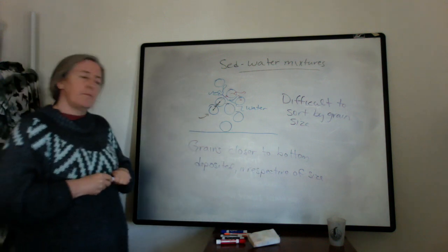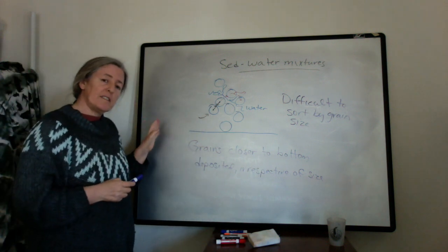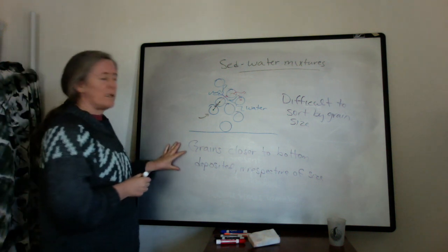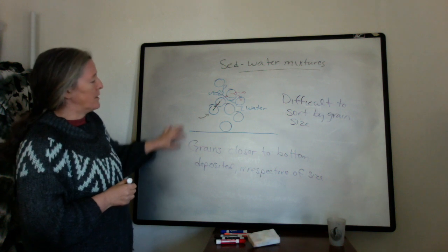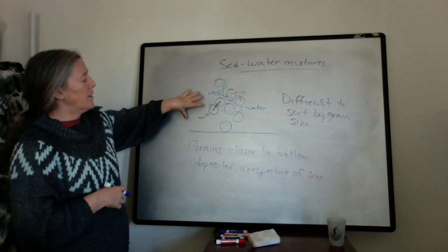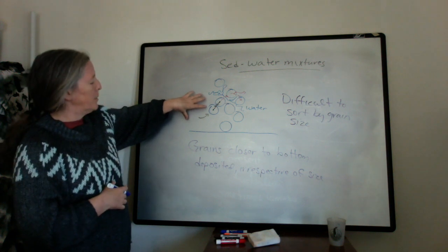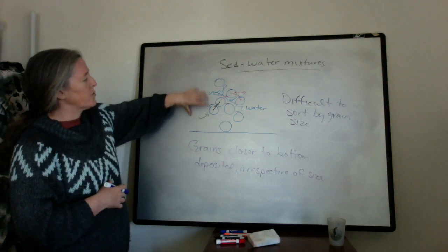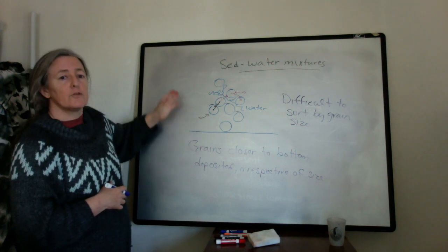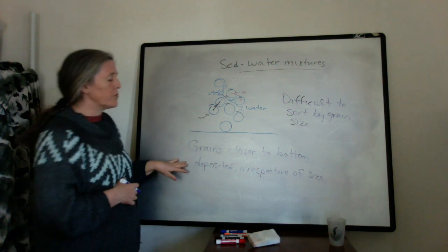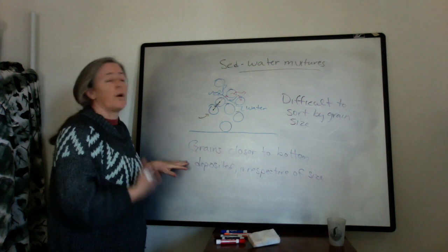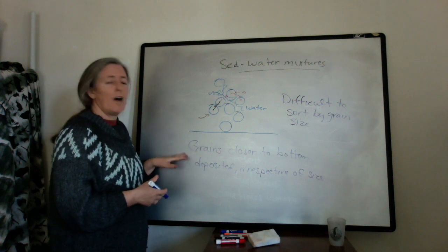So if we think back to the Bouma A facies, which is that bottom one that is massive, that is what's happening to get that deposit. The initial part of the turbidite has so much sediment in it when it's depositing the Bouma A part that those grains are colliding. And you're not sorting them very well. It's true that the larger grains are still closer to the bottom of the flow, so there are more of them. More of them do get deposited, but it's not very well sorted.